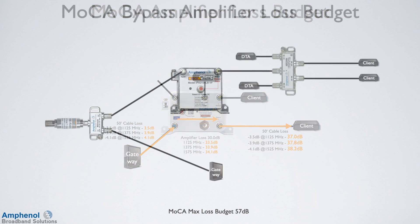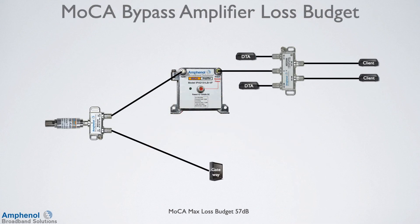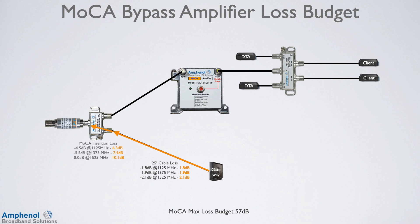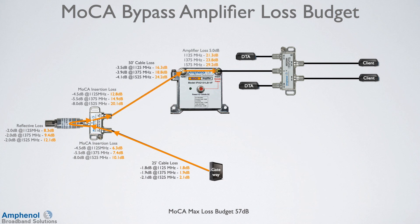In this last example, we'll use the MOCA bypass amplifier — where MOCA devices are both on the input and the output side of the amplifier. We'll calculate the loss from the gateway to the client on the bottom right: cable loss, insertion loss, reflective loss, insertion loss, cable loss, amplifier loss of 5 dB, insertion loss, and cable loss. Add each individual loss up for the total loss budget.